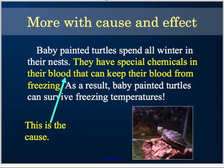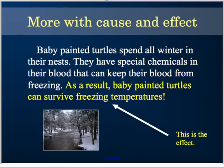This right here is the cause: they have special chemicals in their blood that can keep their blood from freezing. Then, using the clue word 'as a result,' this is the effect: baby painted turtles can survive freezing temperatures. So if they didn't have the cause — that special chemical — they wouldn't have the ability, the effect, to survive in freezing temperatures.